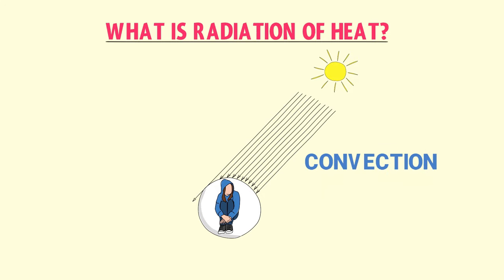We can say that the transfer of heat energy without any material medium, in the form of radiations or electromagnetic waves, is known as radiation of heat. Remember that every object radiates some heat energy until its temperature is absolute zero — and there is a difference between absolute zero and zero degrees centigrade. For example, you, I, and everything around us radiates some sort of heat energy.